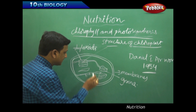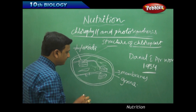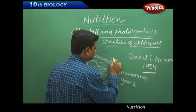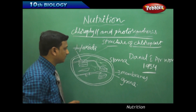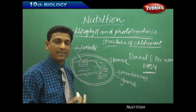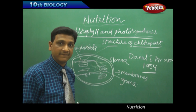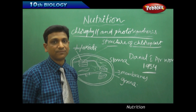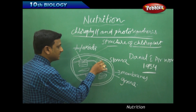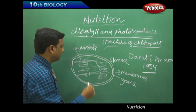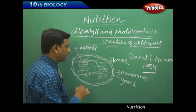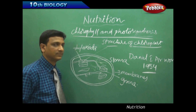Solar energy is captured at the grana site. The remaining space is filled by a fluid called stroma. The stroma is the site for enzymatic reactions — reactions in which molecules like glucose are formed and glucose is converted to starch. So the capture of light takes place in the grana, which has the pigments on its surface, while enzymatic reactions take place in the fluid stroma. This is the structure of the chloroplast.